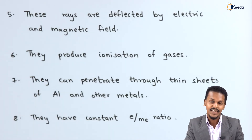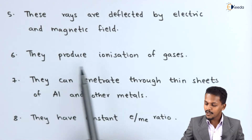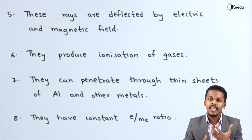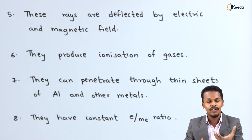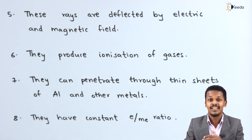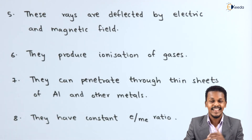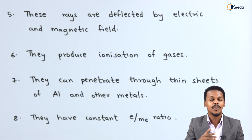Cathode rays produce ionization of gases. Being particles, they can turn a gas into a cation or an anion, demonstrating the ionizing property of cathode rays.